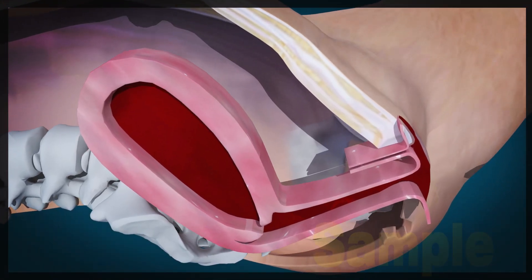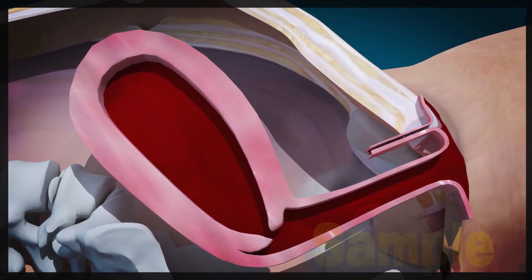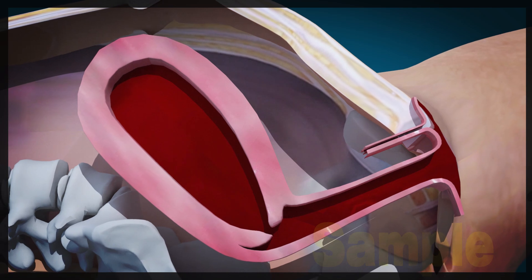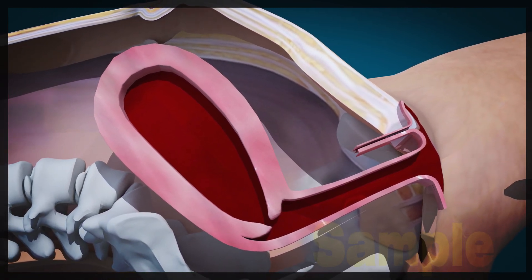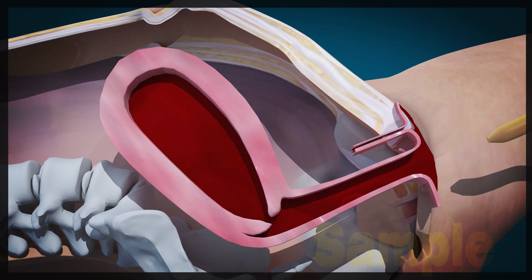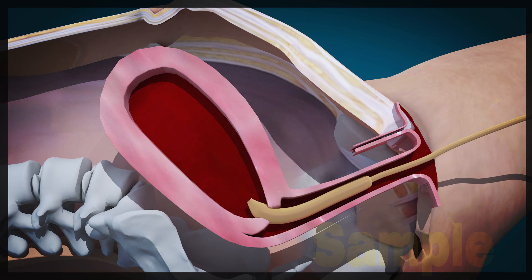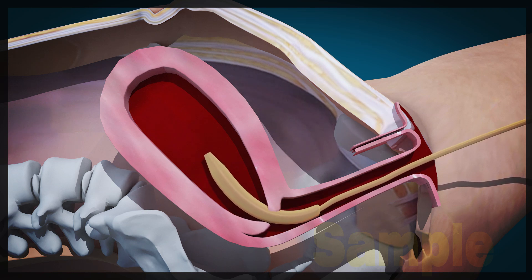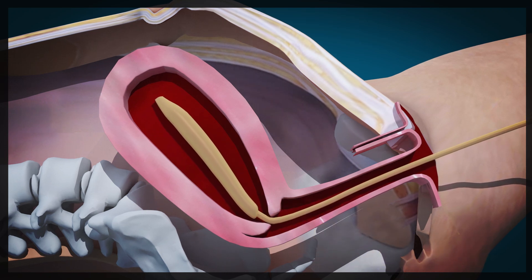The balloon can be placed transvaginally or transabdominally. Before placing the balloon transvaginally, determine the uterine volume with ultrasound or by direct visualization. Insert the balloon portion of the catheter into the uterus, making sure that the entire balloon is inserted past the cervical canal and internal OS. If an indwelling urinary bladder Foley catheter is not already in place, then place one to collect and monitor urine output.